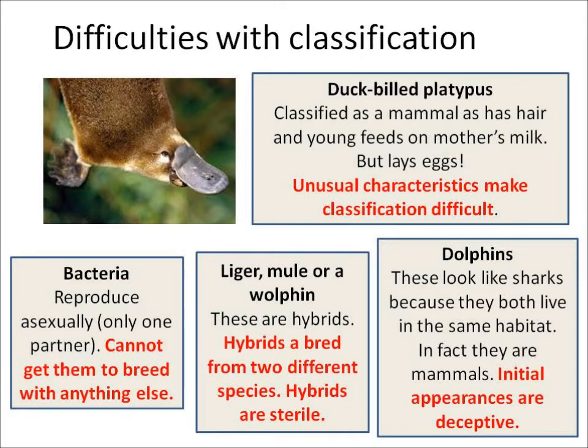In fact, we do really classify it as a mammal. Bacteria only reproduce asexually, so there's only one parent. And as a result, you can't get them to breed with anything else, and that makes classification difficult.